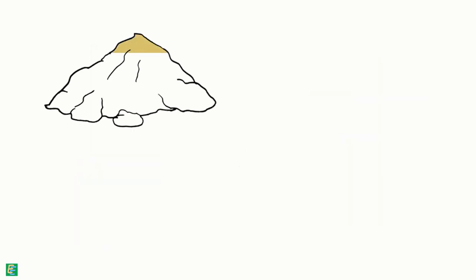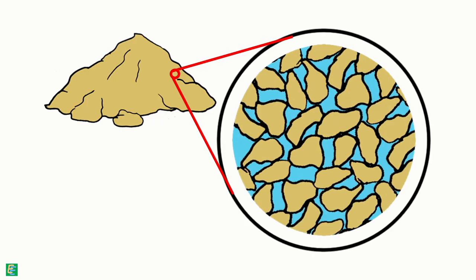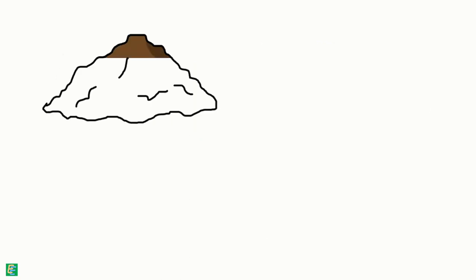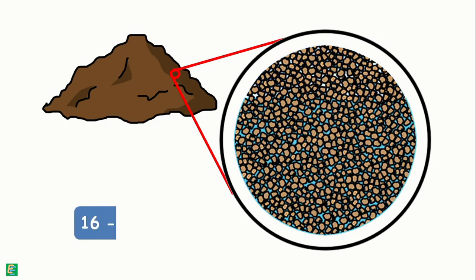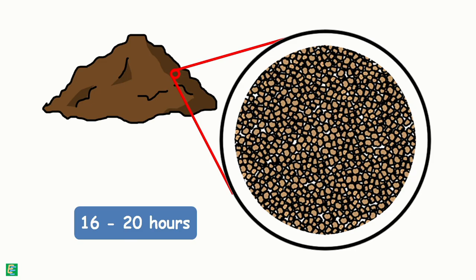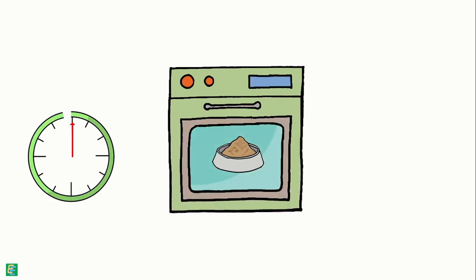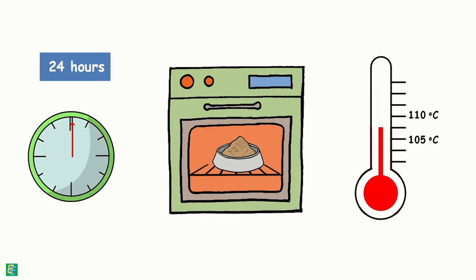If soil is sandy, that is it has large particles and large pores, then it gets completely dry in 4 to 6 hours. And if the soil is clay, that is it has small particle size and small pore size, then it may take 16 to 24 hours to fully dry. But we maintain the laboratory practice of drying the soil sample for 24 hours at temperature of 105 to 110 degrees centigrade.